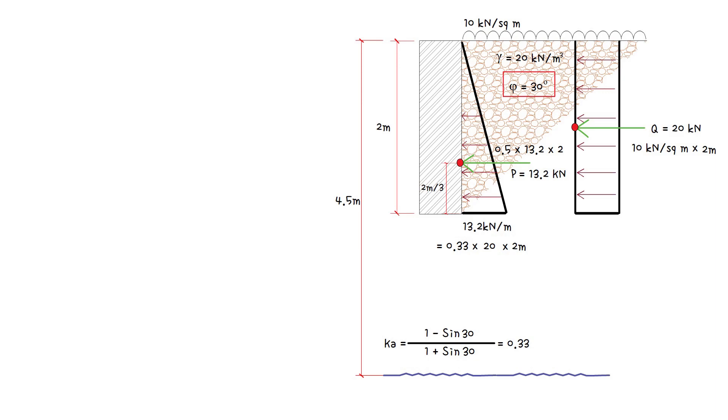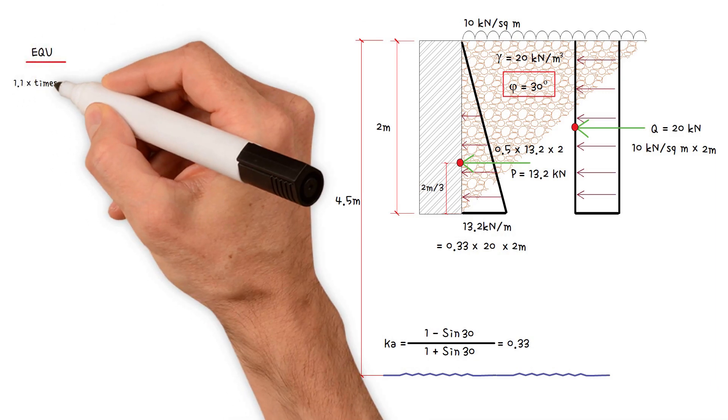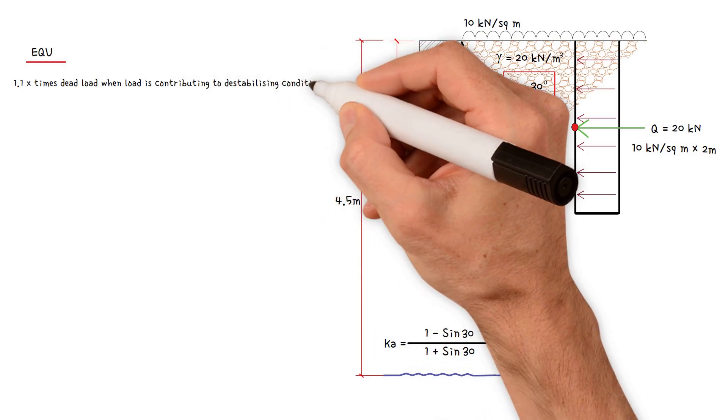Next, we need to work out the ultimate load combinations for designing the wall. Bear in mind that partial factors for loads originating from pressures due to retained materials vary depending on the type of analysis being carried out. In the case of checking for equilibrium, the following partial factors apply to dead and imposed loads.